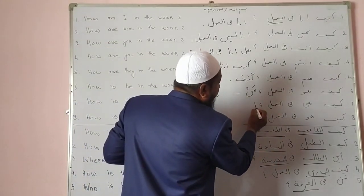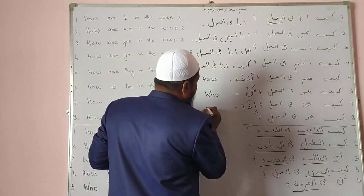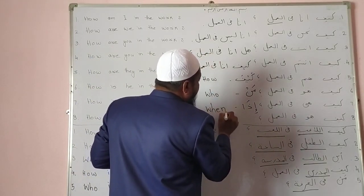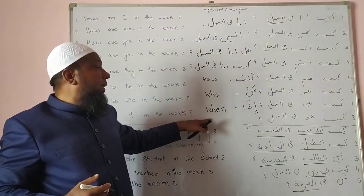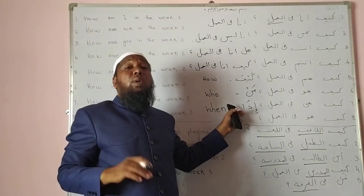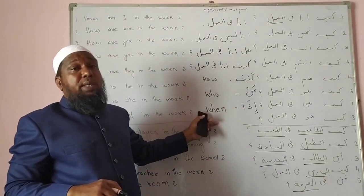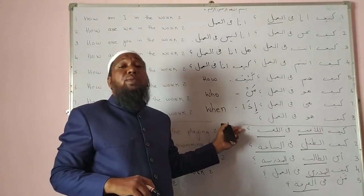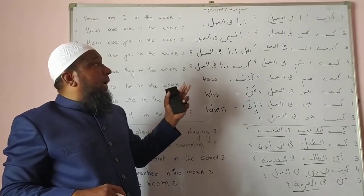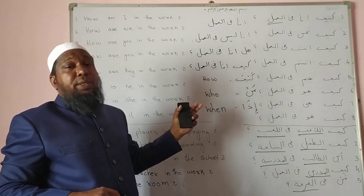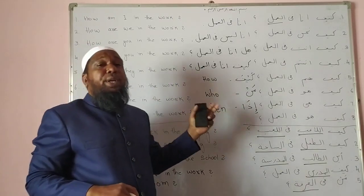Likewise, another interrogative word is Iza, which means 'when' — qab. For example: Iza ja nasrullahi wal fath. So there are many interrogative words in Arabic. Now let's translate Arabic sentences into English and then from Arabic into Urdu.